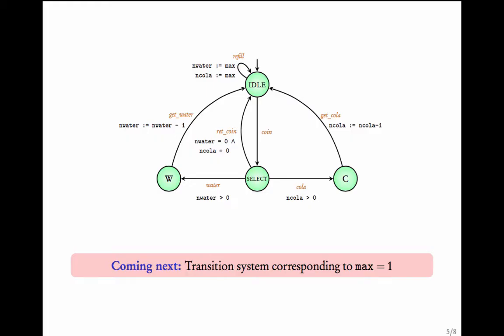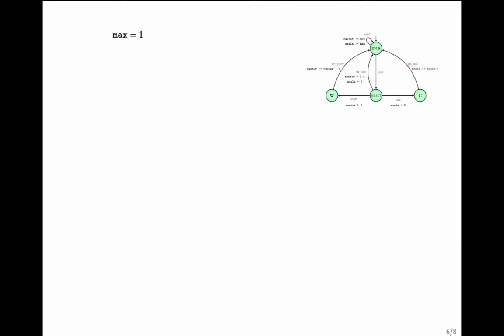Given the initial values of the variables, one can associate a transition system that represents the working of this program graph starting from those values. We will explain this taking the initial value of max to be equal to 1. Starting from max equal to 1, the program graph performs different executions, and we want a transition system that represents these executions.